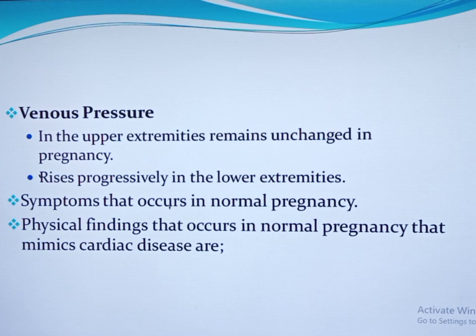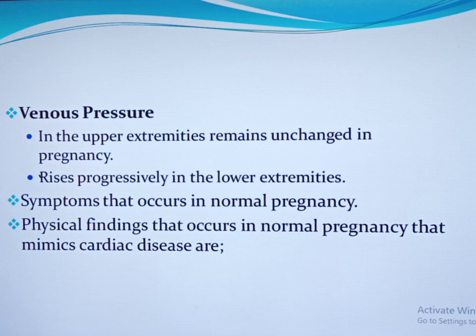In the upper extremities, venous pressure remains unchanged. But in the lower extremities, venous pressure increases progressively. This increment, in combination with compression of the inferior vena cava by the gravid uterus, results in a significantly increased risk of edema in the lower extremities, varicose veins, increased risk of DVT, and hemorrhoids.